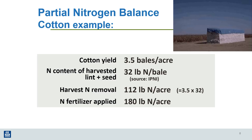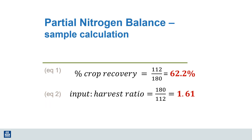Let's go through a couple of examples on how to calculate a partial nitrogen budget, starting with this cotton example. On this hypothetical farm there was 112 pounds of nitrogen removed in the cotton during harvest and 180 pounds of nitrogen applied to the crop. This calculation gives us a nitrogen efficiency factor of 62%, or an applied-to-removal ratio of 1.61.